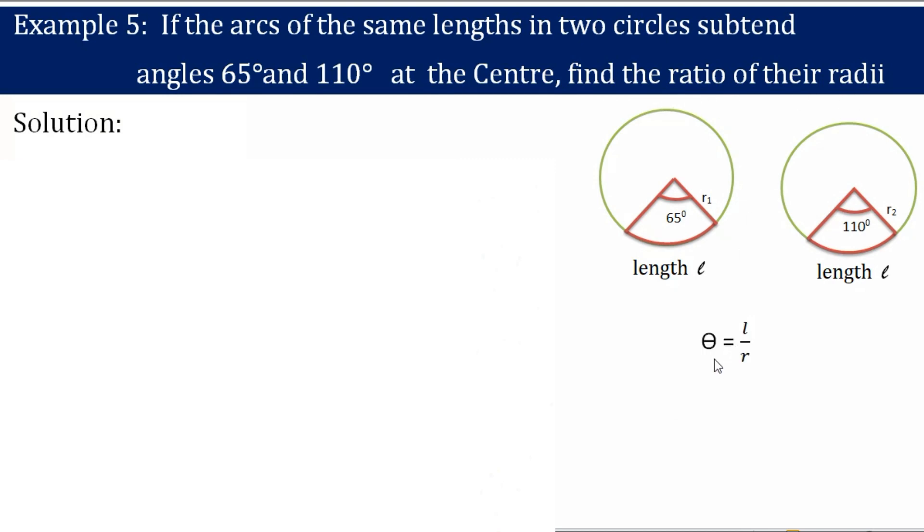From this relation, theta is equal to L by R, we have L is equal to R times theta. Where L is length of arc, R is radius, and theta is angle. Theta is a central angle.